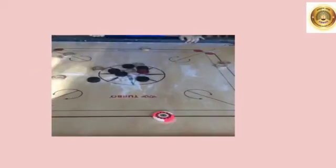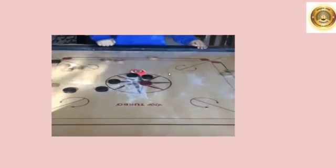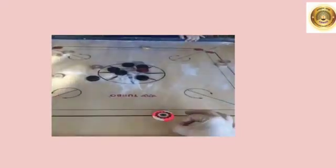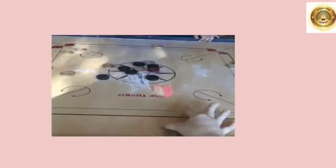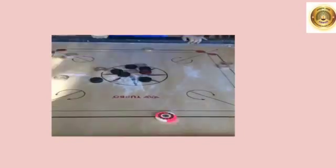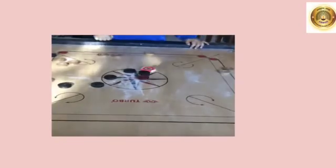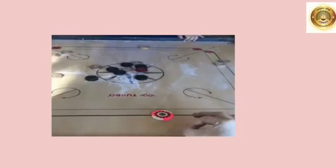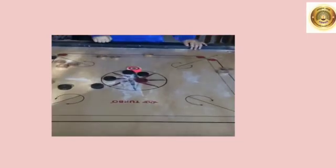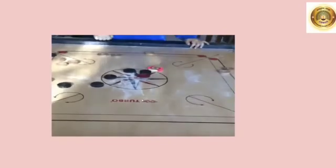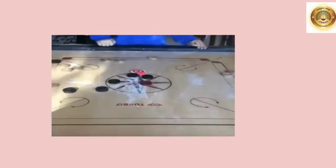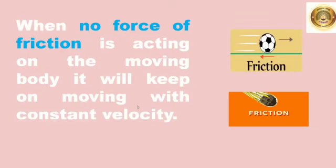Now let us see what is friction. On a carom board, the carom coin pushed by a striker will move forward some distance and then come to a stop. We put talcum powder or boric powder before the game so that the coins move smoothly for a longer time. The velocity of the coin decreases due to the force of friction and the coin stops. If the friction between the carom board and the coin is reduced, the coin will move for a longer time. This means that if no friction is acting on the body, it will keep on moving with a constant velocity.